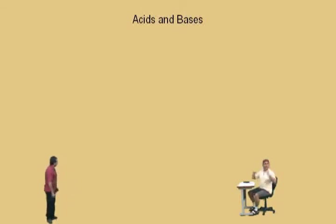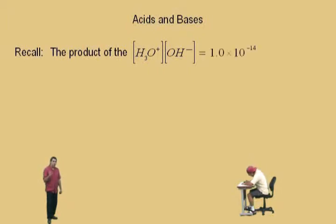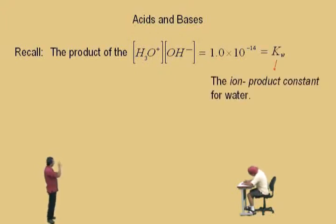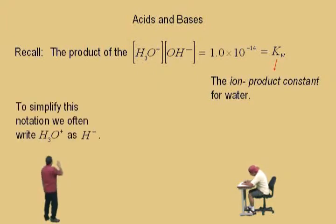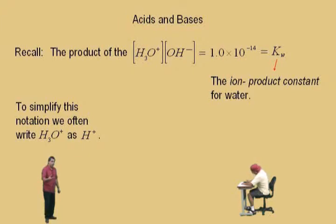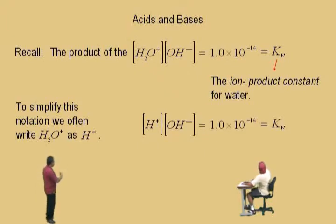Recall from your chemistry class that the product of the hydronium ion concentration and the hydroxide ion concentration will always equal 1.0 times 10 to the negative 14th. That was called the ion product constant for water, denoted by the variable K_w. Now, to simplify the notation, we often replace H₃O⁺ with H⁺, so we say hydrogen ion concentration times hydroxide ion concentration equals 1.0 times 10⁻¹⁴. That's K_w.